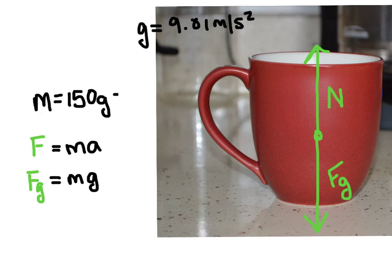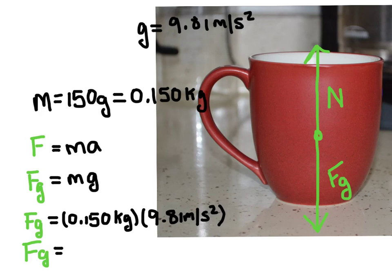First of all, we do need to change the mass into SI units, which is kilograms. So I'll divide this by 1000 to get kilograms. And so I've plugged in the mass and the acceleration due to gravity. And so the force of gravity is equal to 1.47 newtons. And the SI unit for force is newtons.